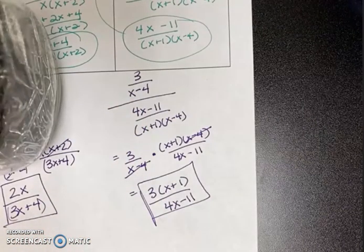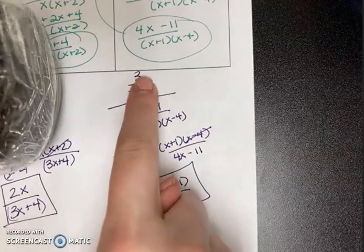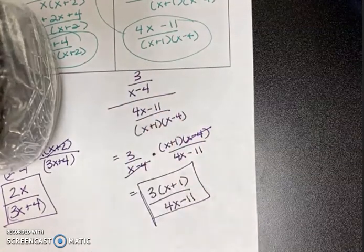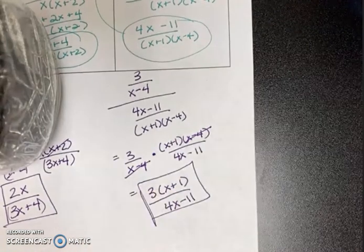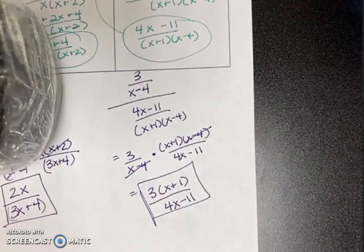Because this is overall a division problem, I did keep, change, flip. The x minus 4 is canceled. And I was left with 3 times x plus 1 all over 4x minus 11.